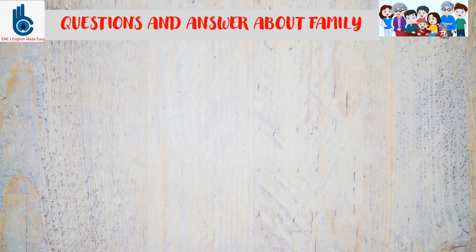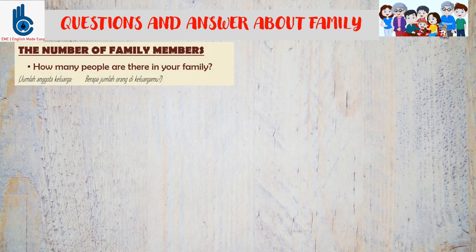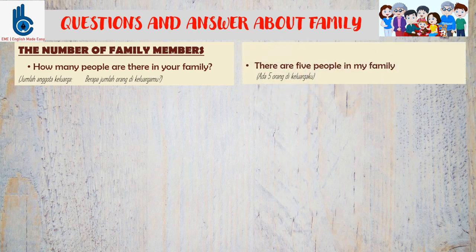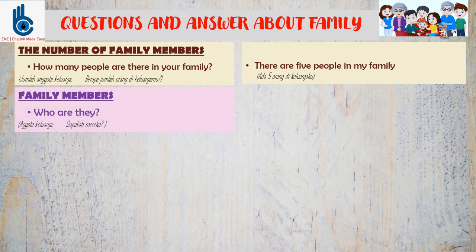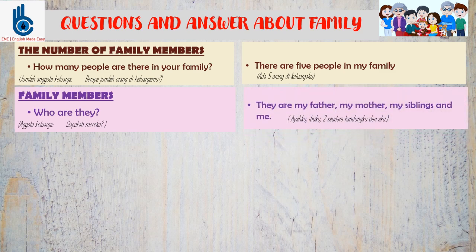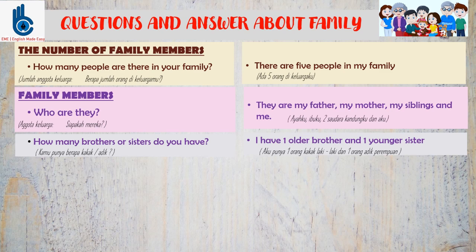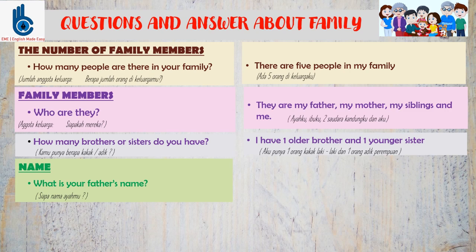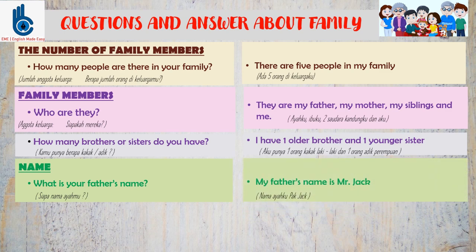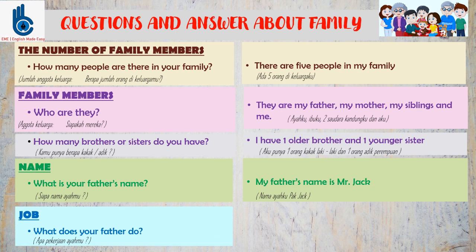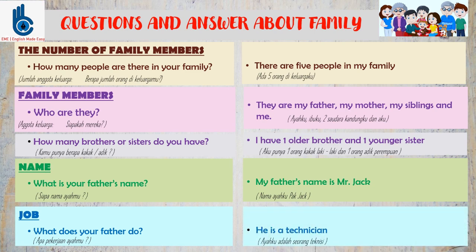In the previous dialogue, we can see there are some questions and answers about family. To ask about the number of family members, you can say, 'How many people are there in your family?' and answer, 'There are five people in my family.' To ask about family members, say 'Who are they?' and answer, 'They are my father, my mother, my siblings, and me.' You can also ask, 'How many brothers or sisters do you have?' and answer, 'I have one older brother and one younger sister.' To ask about names, say 'What is your father's name?' and answer, 'My father's name is Mr. Jack.' To ask about jobs, say 'What does your father do?' and answer, 'He is a technician.'